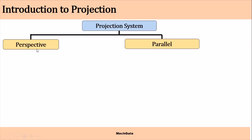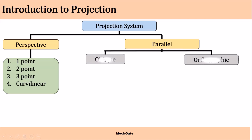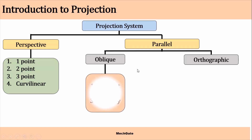The perspective projection system is further divided into one-point perspective, two-point perspective, three-point perspective, and curvilinear. Parallel projection can be divided into oblique parallel projection and orthographic parallel projection. Oblique parallel projection can be further divided into cabinet projection, cavalier projection, and military projection.